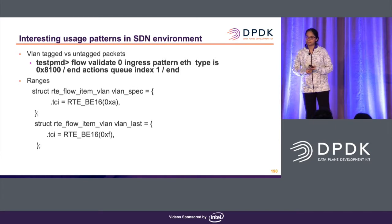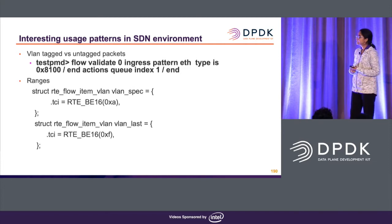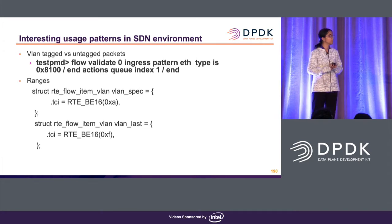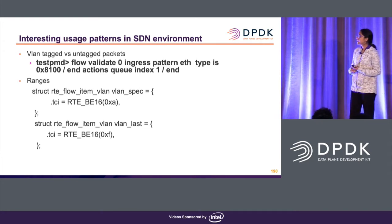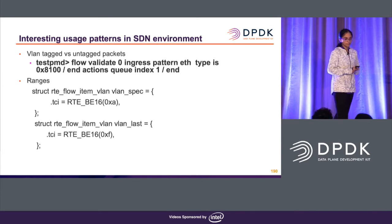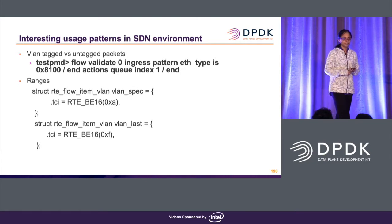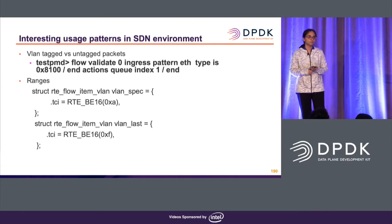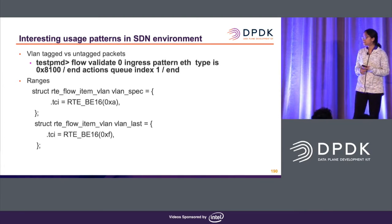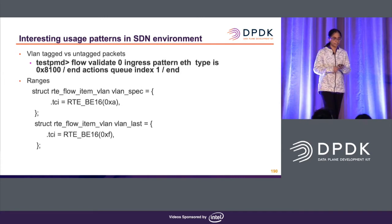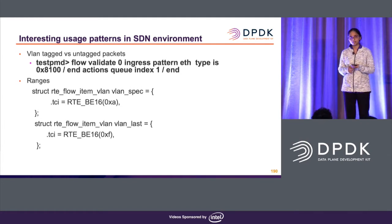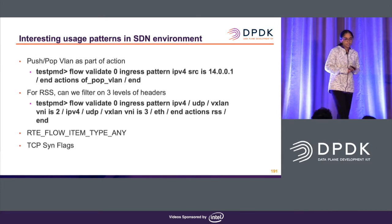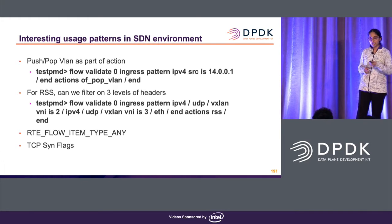To explain the flow: 'validate' does not try to create a flow — it just confirms whether such a flow can be offloaded or not. 'Create' will first validate the flow and then try to create it. Zero is the port ID, and 'ingress' is the direction. In the pattern, I've mentioned that the type is hex 8100, which is the value for a VLAN tag, and the action sends it to Q1. For ranges, when creating an RTflow you mention spec and mask, but for ranges you also mention 'last' — for example, matching all packets with a VLAN ID between 10 and 15. For push or pop VLAN, I've used the action 'off pop VLAN'.